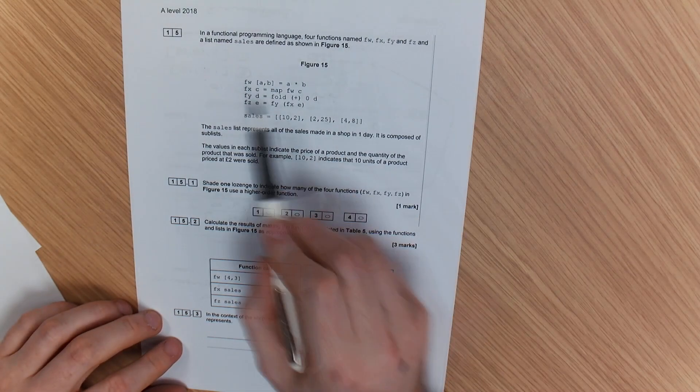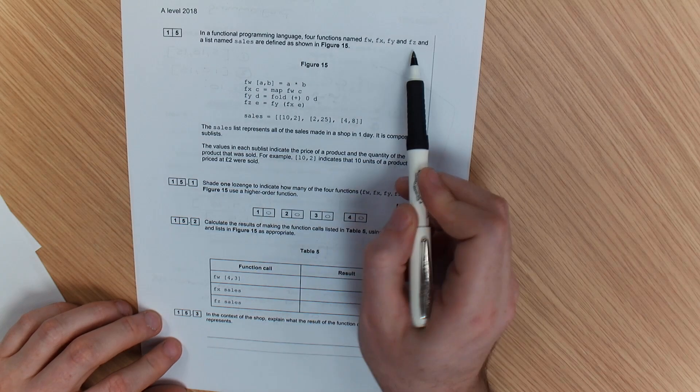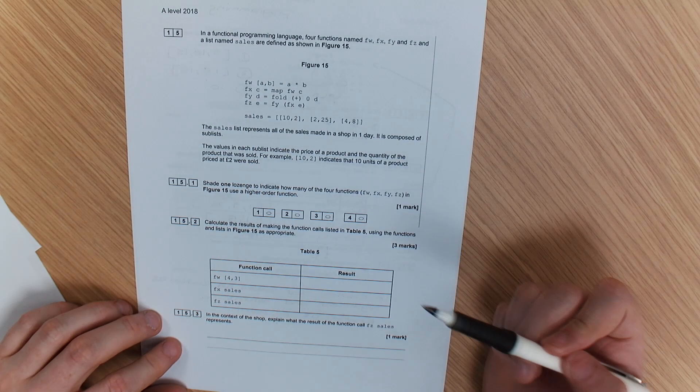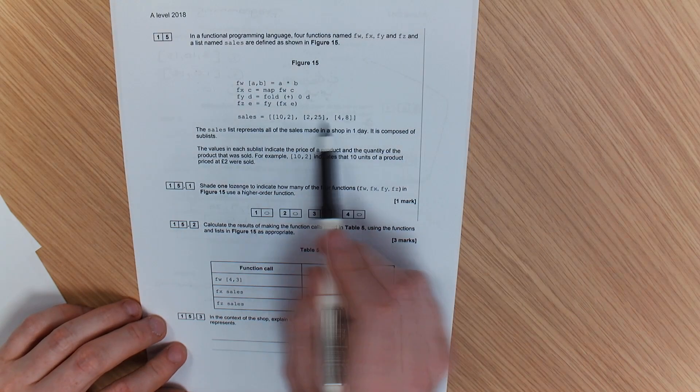So we've got four functions that have been made here: FW, FX, FY, and FZ. And a list of names, sales, are defined as shown. So I've got sales, that's my sales data.